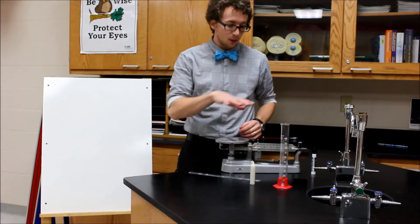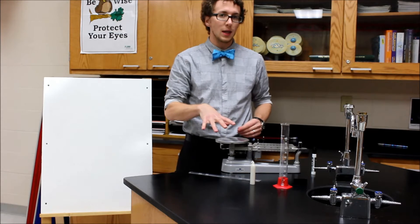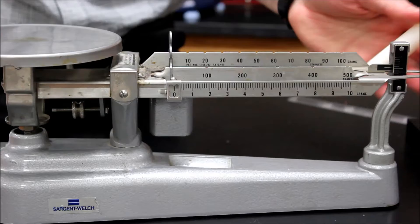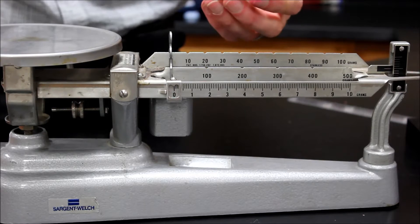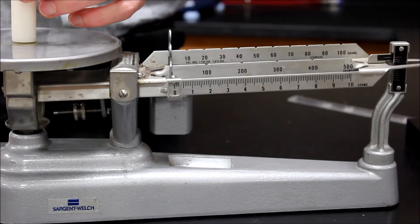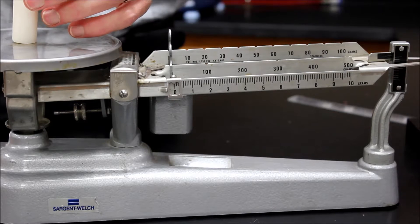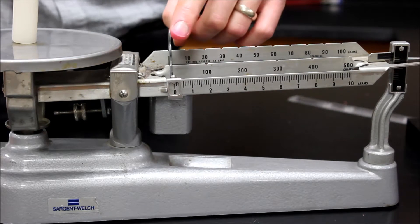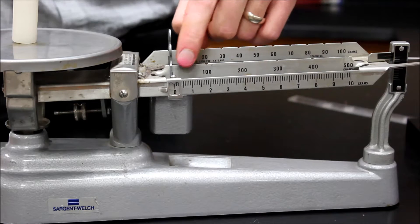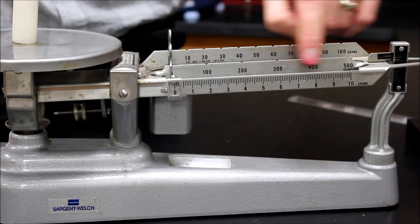So to start off with we're going to do the triple beam balance. Now the first thing I want to do is place the object that I want to weigh in the center of the pan on the triple beam balance. To start off with I'm going to move the largest weight first. That's this beam right here because it goes by 100 at a time.